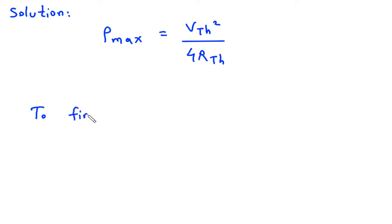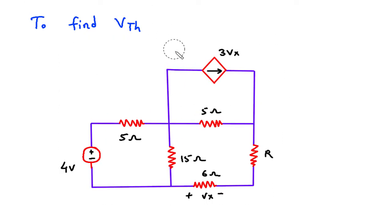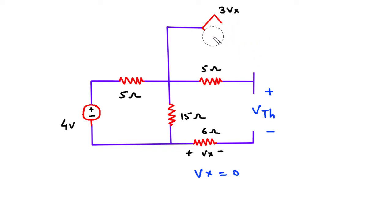To find Vth, we will redraw the circuit. Now here this will be Vth, positive negative Vth. Now here we can see this is open circuited. So this Vx is equal to 0. Since Vx is equal to 0, this dependent current source will be 0, because it is 3Vx — 3 into 0 is 0. So this will be open circuited. So this will be Vth. Voltage across this 15 ohm is the value of Vth.